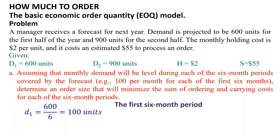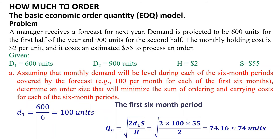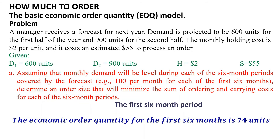For the first question, starting with the first six-month period: the monthly demand D1 equals 600 divided by 6, equals 100 units. Q0 equals the square root of 2 multiplied by D1 multiplied by S divided by H, which equals the square root of 2 multiplied by 100 multiplied by 55 divided by 2, equals 74.16, approximately 74 units. So the economic order quantity for the first six months is 74 units.